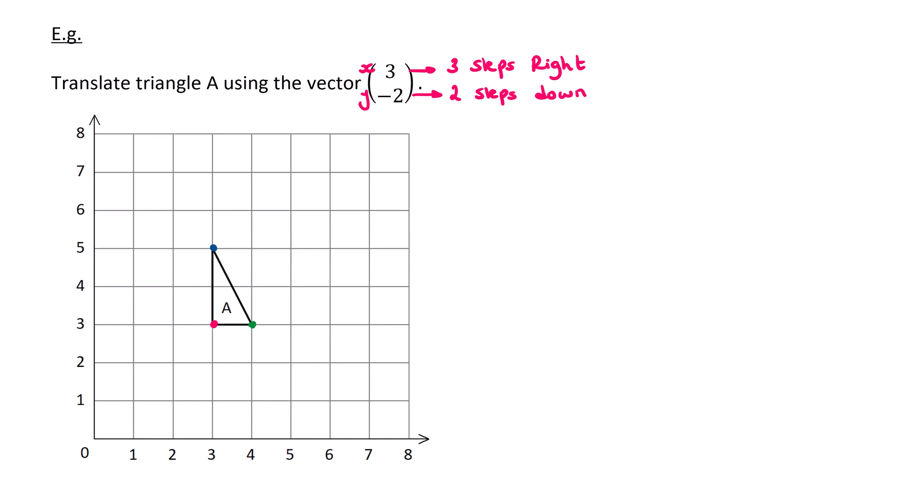So your pencil should be on one of the vertices. I'm going to start with the blue one. And as I move, that's one. That's the first movement. So don't start counting one here, you haven't moved.